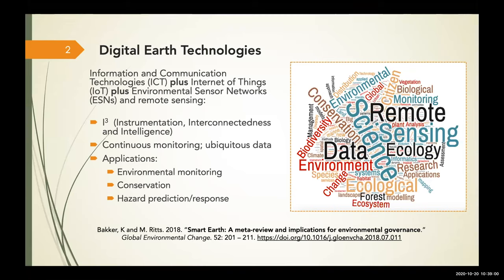Another interesting development is the emergence of mobile protected areas. In the 20th century, many parks and protected areas had fixed boundaries. Now, with computationally intensive management, they can be mobile. We have mobile protected areas that follow endangered bluefin tuna as they move across the Pacific Ocean through the Great Australian Bight, which means the rules enforced about tuna fishing change daily, spatially and temporally across the ocean surface.